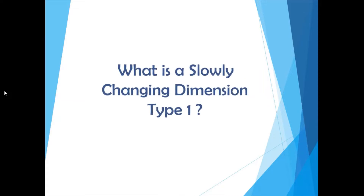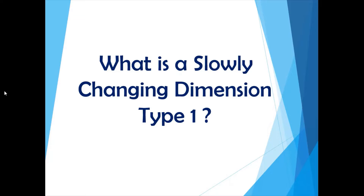The first question is: what is a slowly changing dimension type 1? A slowly changing dimension is mostly of three types — type 1, type 2, and type 3 — and we are going to discuss them. A slowly changing dimension type refers to the way you store updated records in a dimension table.